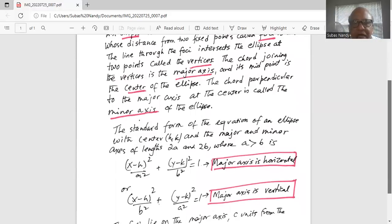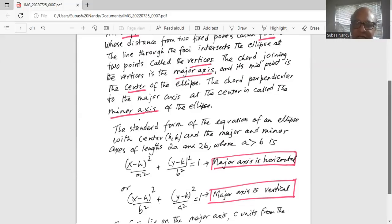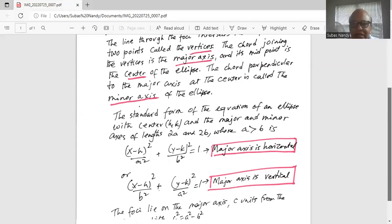On the other hand, if we have (x-h)²/b² + (y-k)²/a² = 1, then the major axis of the ellipse is vertical, where a is greater than b.